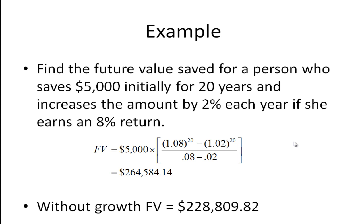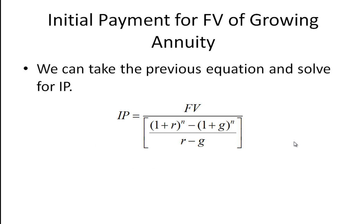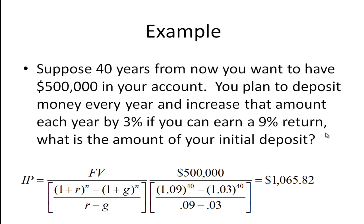Finally we can solve for the initial payment. This might be the case where we say look, I want to have $500,000 or I want to have a million dollars in my retirement account in 30 years or 40 years. I know what return I'm going to earn, I have a pretty good estimate, I'm planning to increase the amount I put in each year. How much do I have to start with? So in this example, 40 years from now you'd like to have a half a million dollars in your account. You plan to deposit money every year and increase that amount by three percent. If you can earn a nine percent return, what's the amount of your initial deposit? So again substituting into this equation where we just solve for the initial payment, we're going to get $1,065.82.